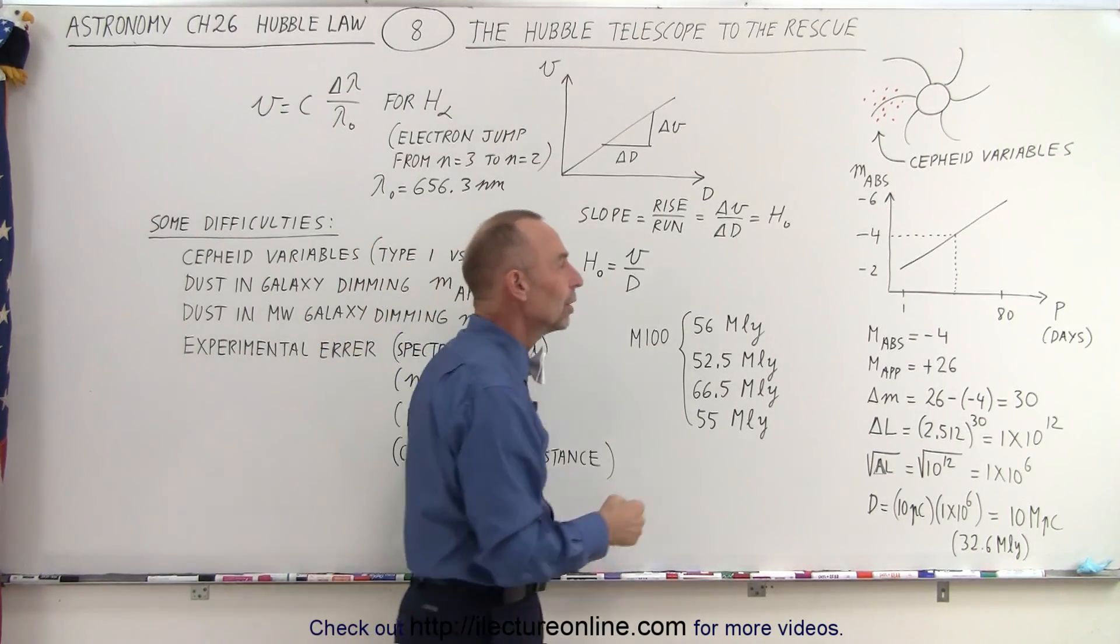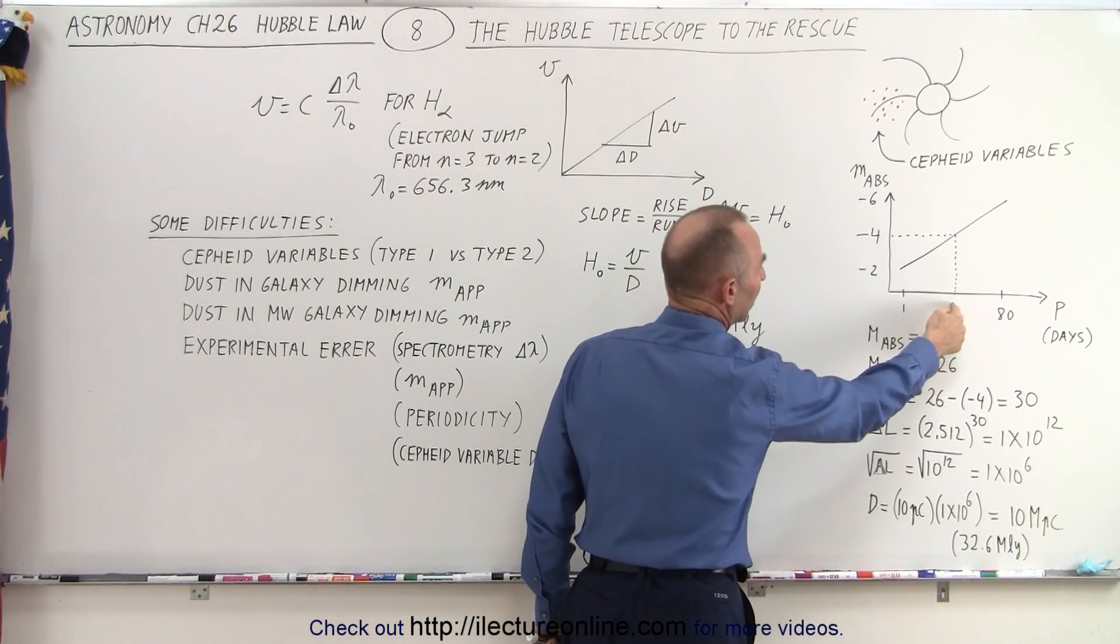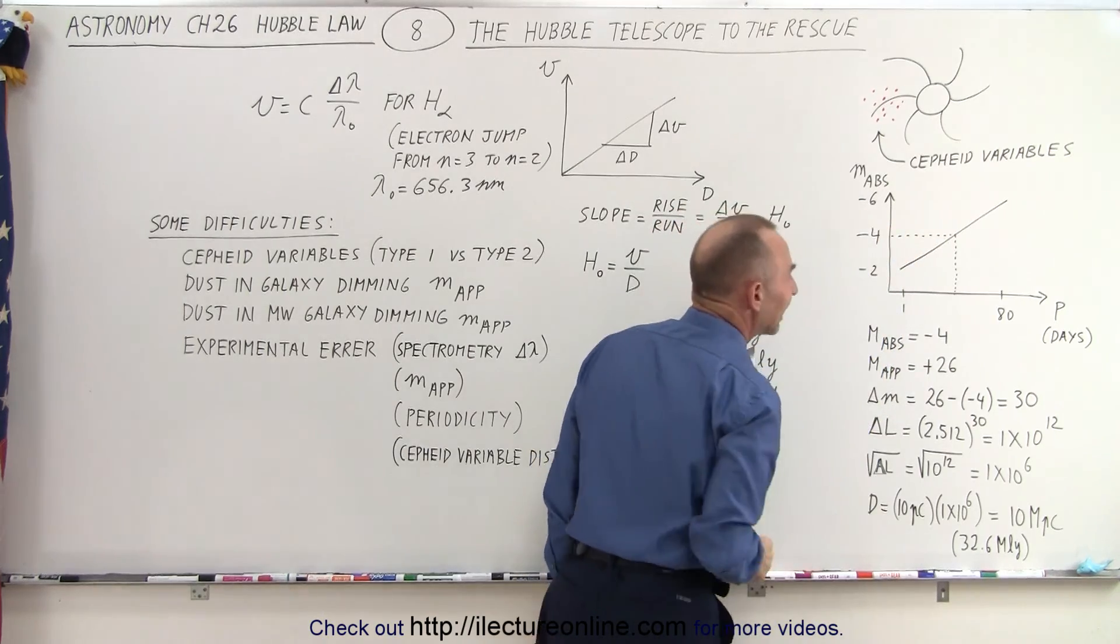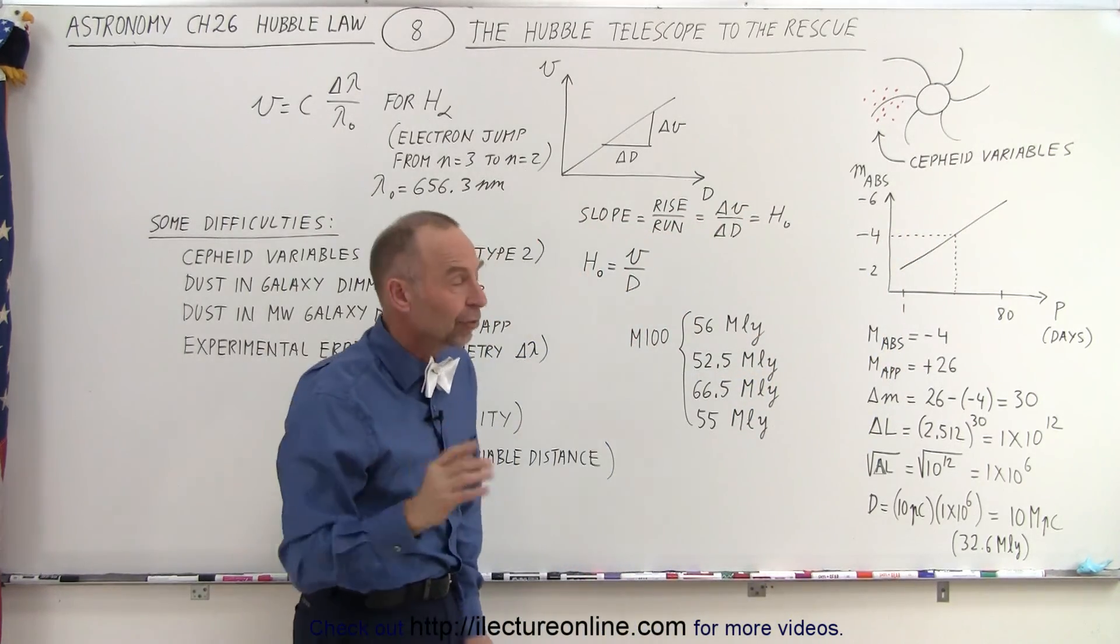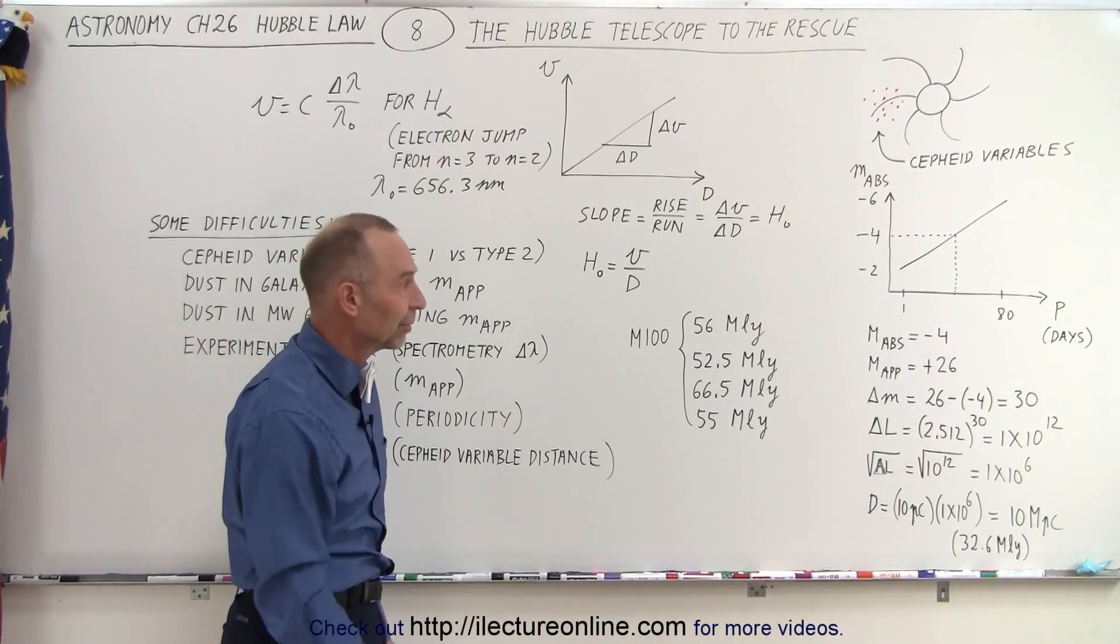What you do is determine the absolute magnitude by measuring the period. So you get a certain period and on the graph you then from that get the absolute brightness, the absolute magnitude of that Cepheid variable. And of course you do that for every one of the Cepheid variables that you found.